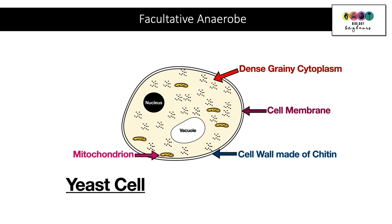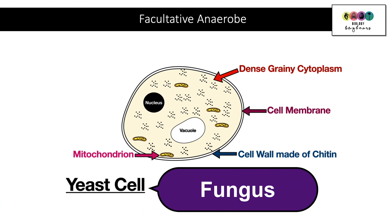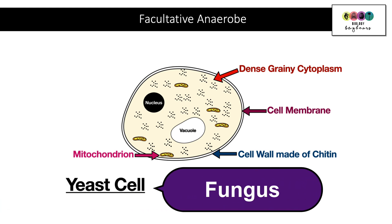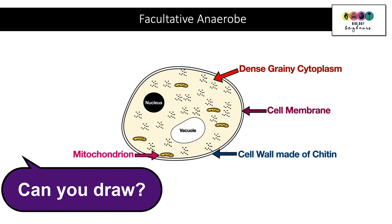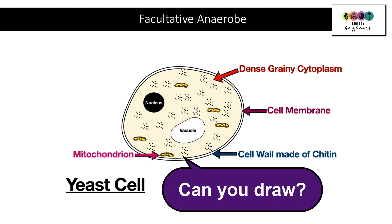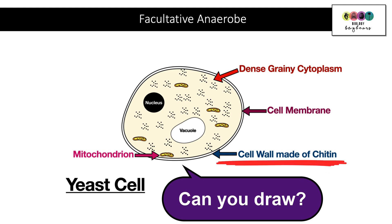Yeast is a fungus and we've encountered this unicellular organism in many places throughout the course — during enzyme immobilisation and during respiration or alcohol fermentation. It's really important that you study yeast: go over how it reproduces by budding, be able to draw and label its diagram, and remember that it has a cell wall made of chitin.